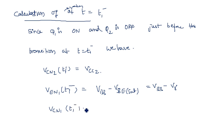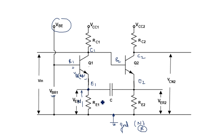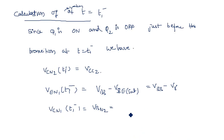VCN1 at T1⁻ also equals VBN2, because collector 1 and base 2 are directly connected at the same node. Therefore VBN2 equals VCN1 plus VCE(sat), which gives VBB minus Vγ plus VCE(sat).